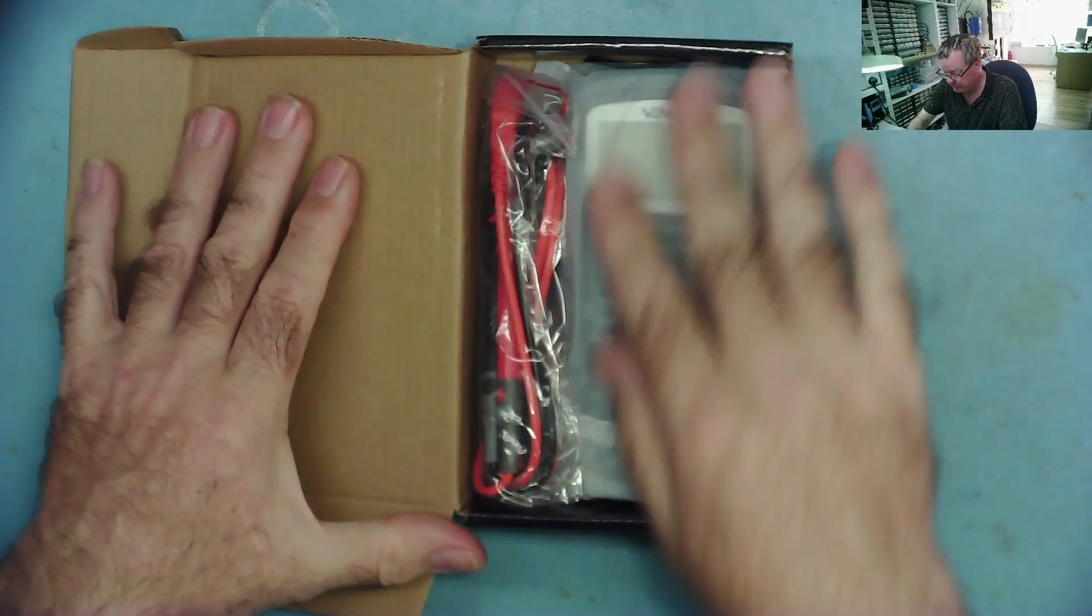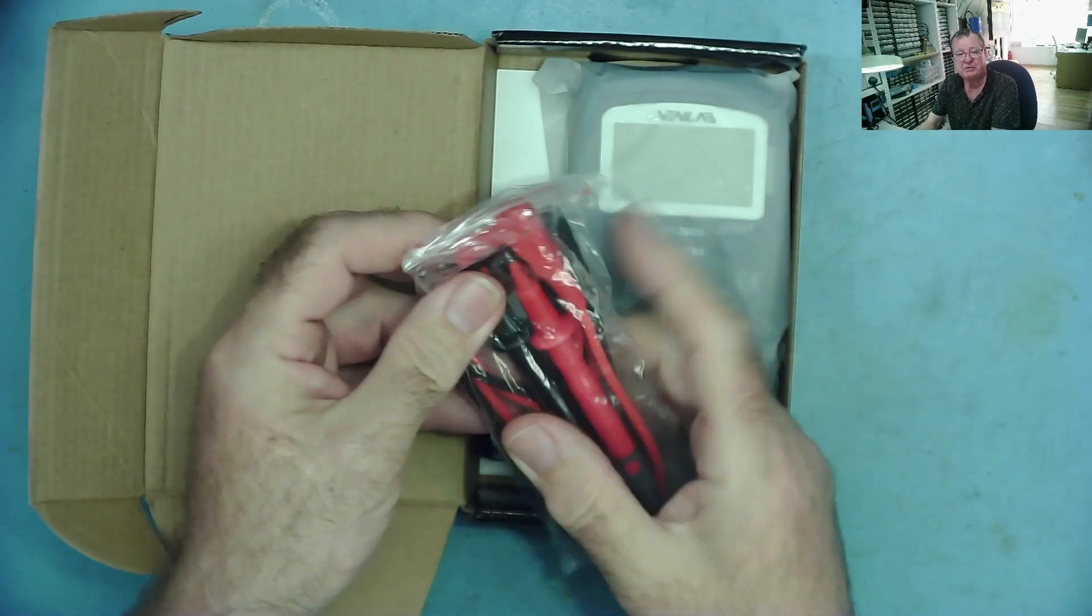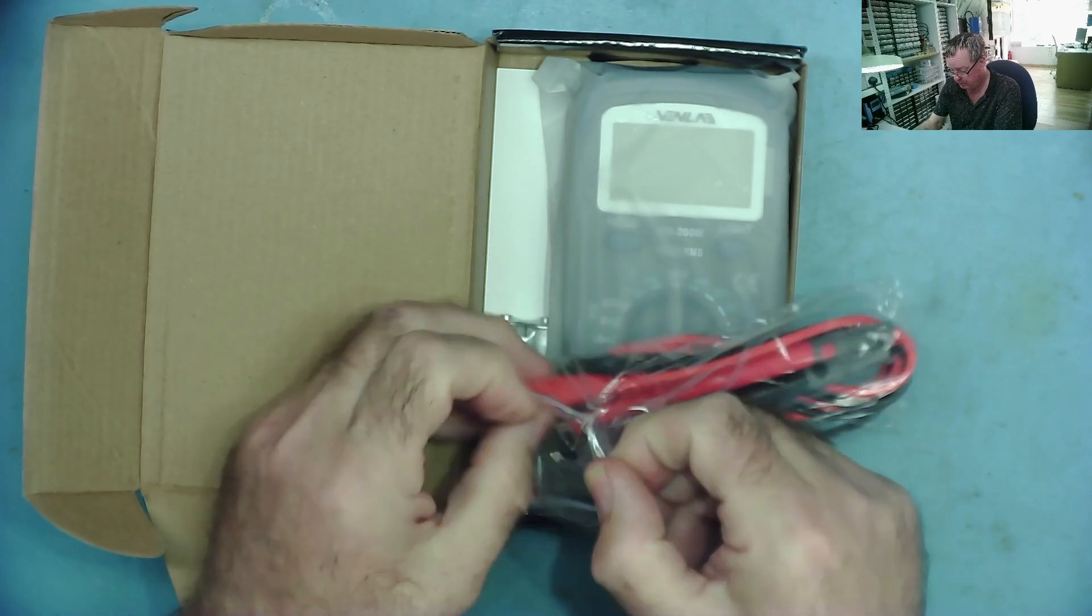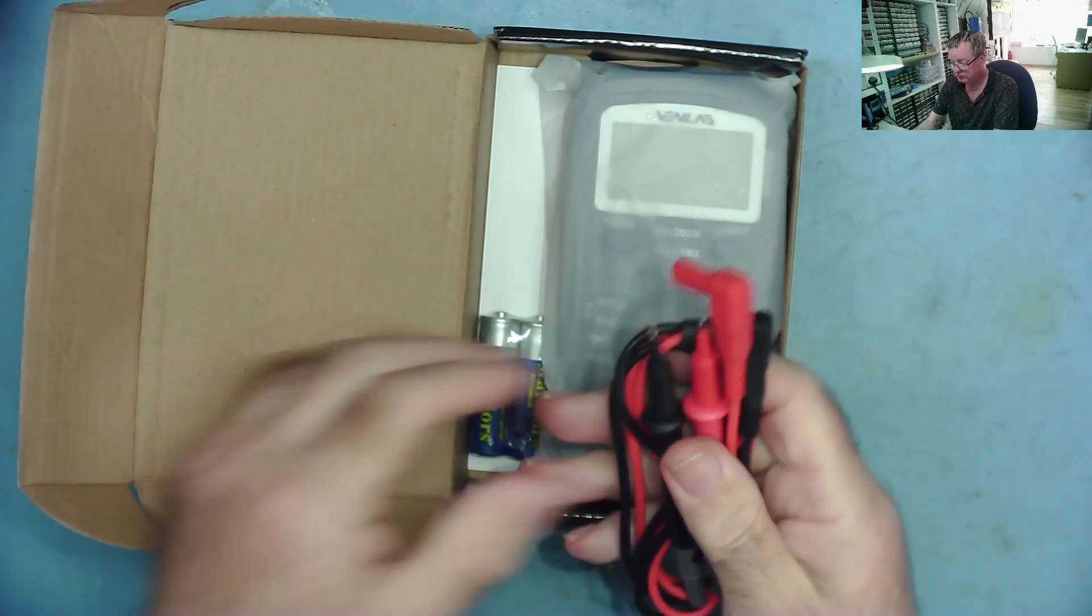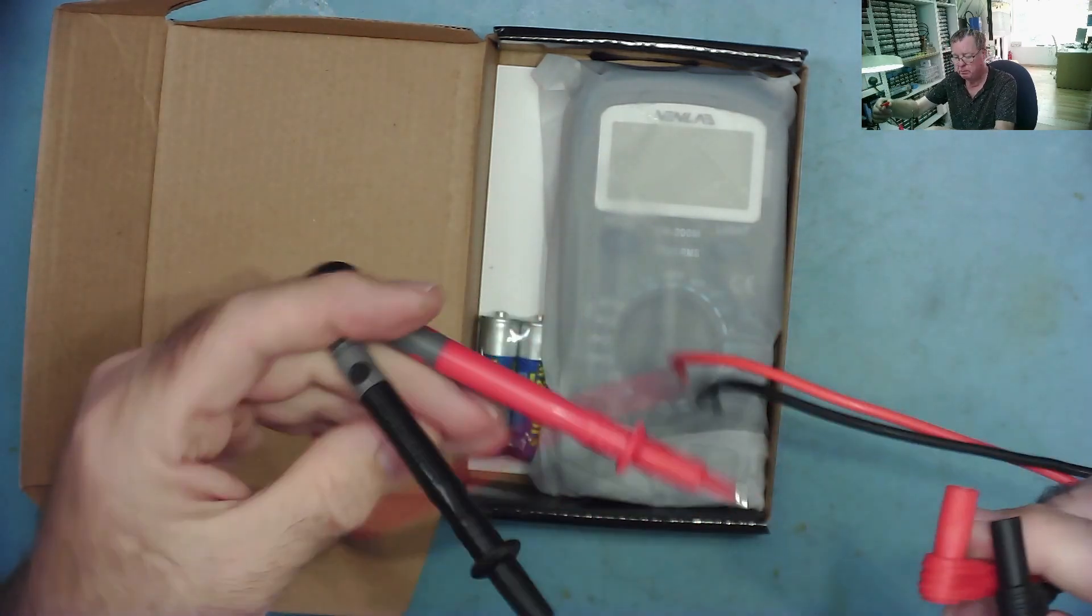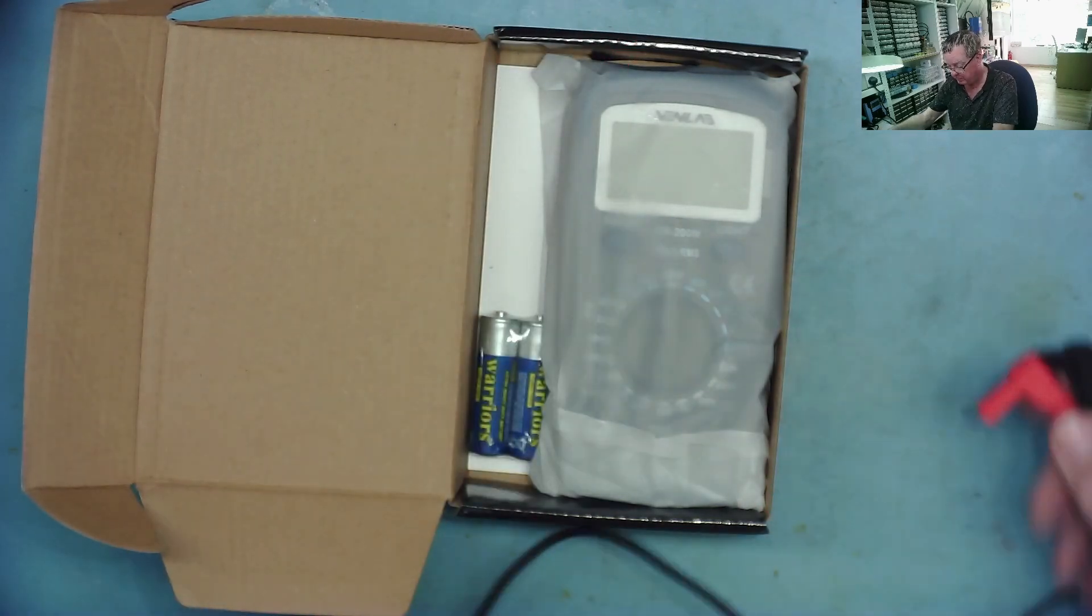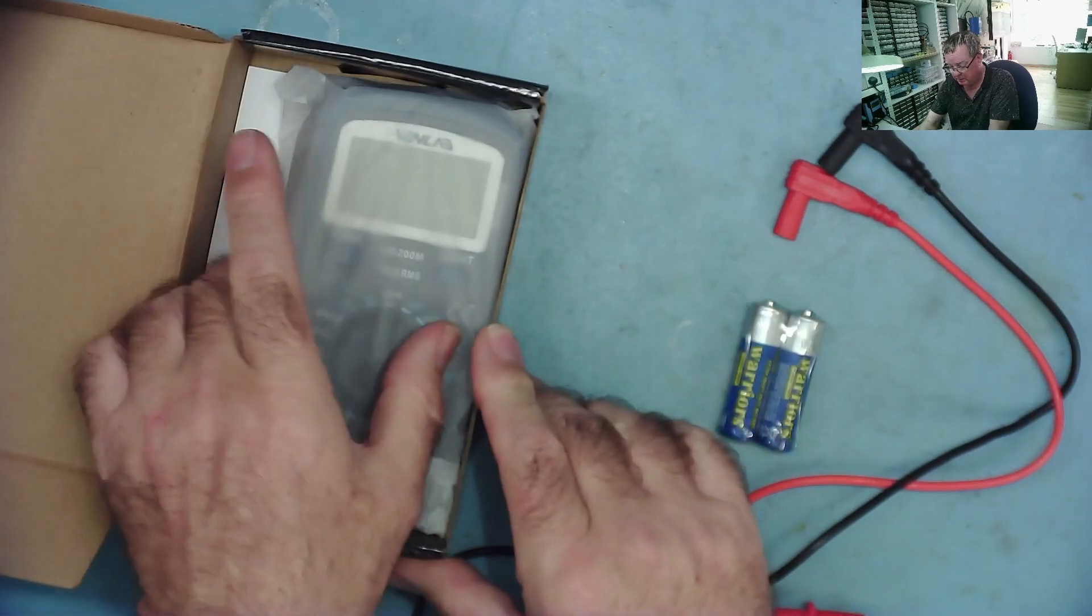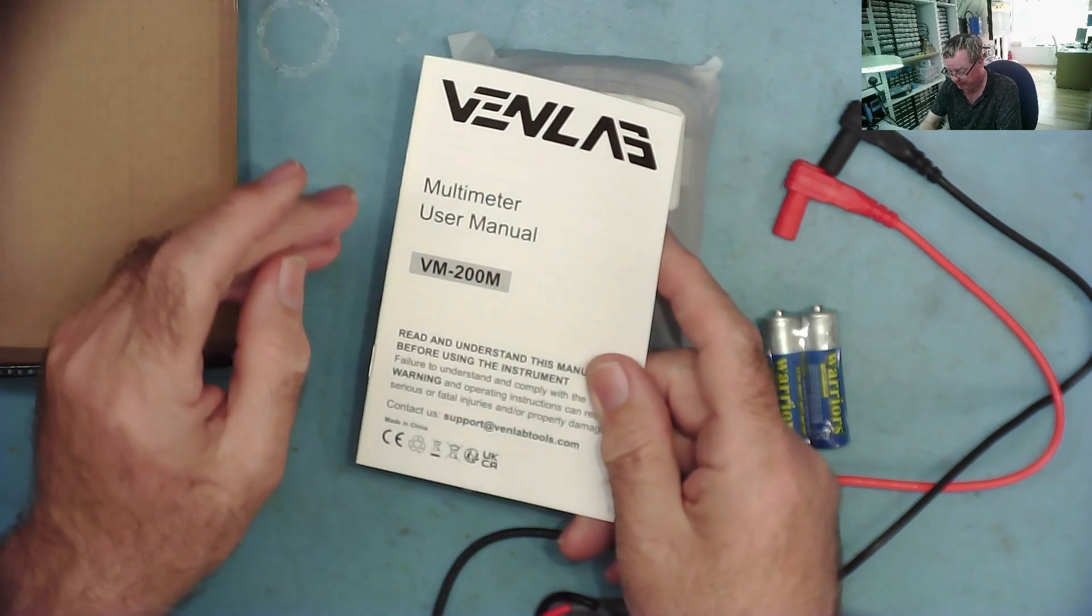Here it is, still sealed. We'll open the box. We have some test leads—let's have a look at them. They're not very long compared to ones I normally use. We have some batteries, the multimeter itself, and a user manual.